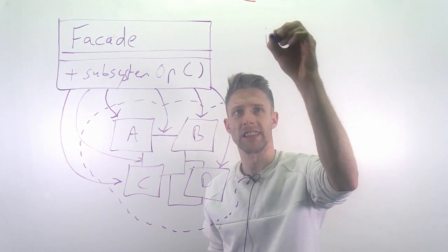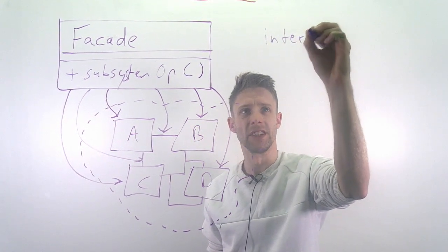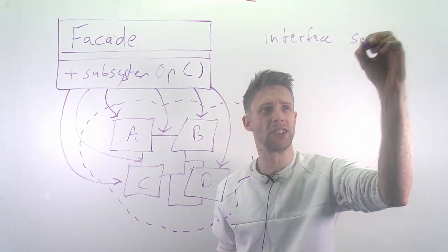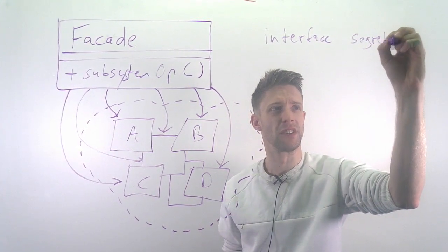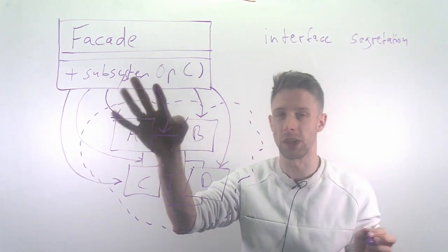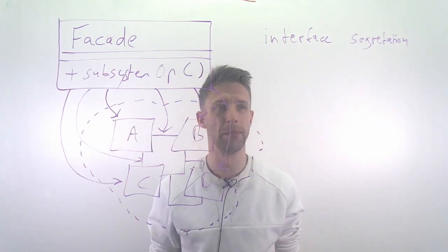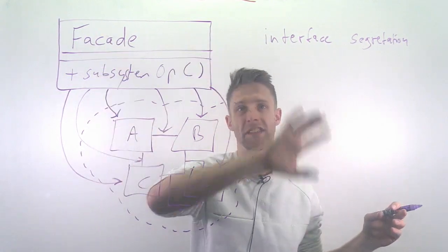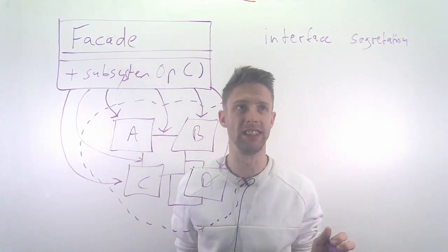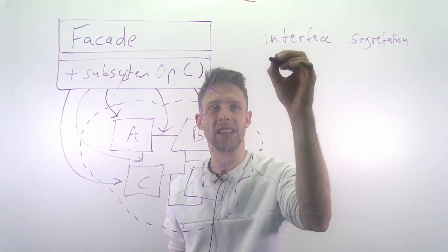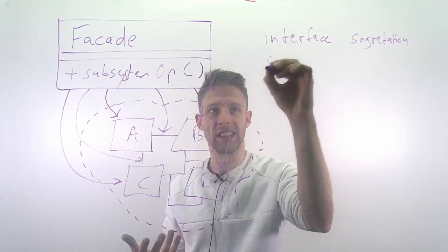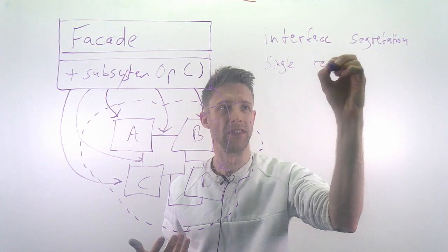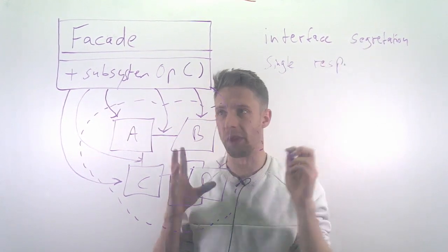In terms of SOLID, it's interface segregation—you're offering just one specific interface for a specific use case, for example, one specific routing algorithm. If you have more use cases, you might have more facades. It's also single responsibility: the facade only does one thing, it provides this option and nothing else.